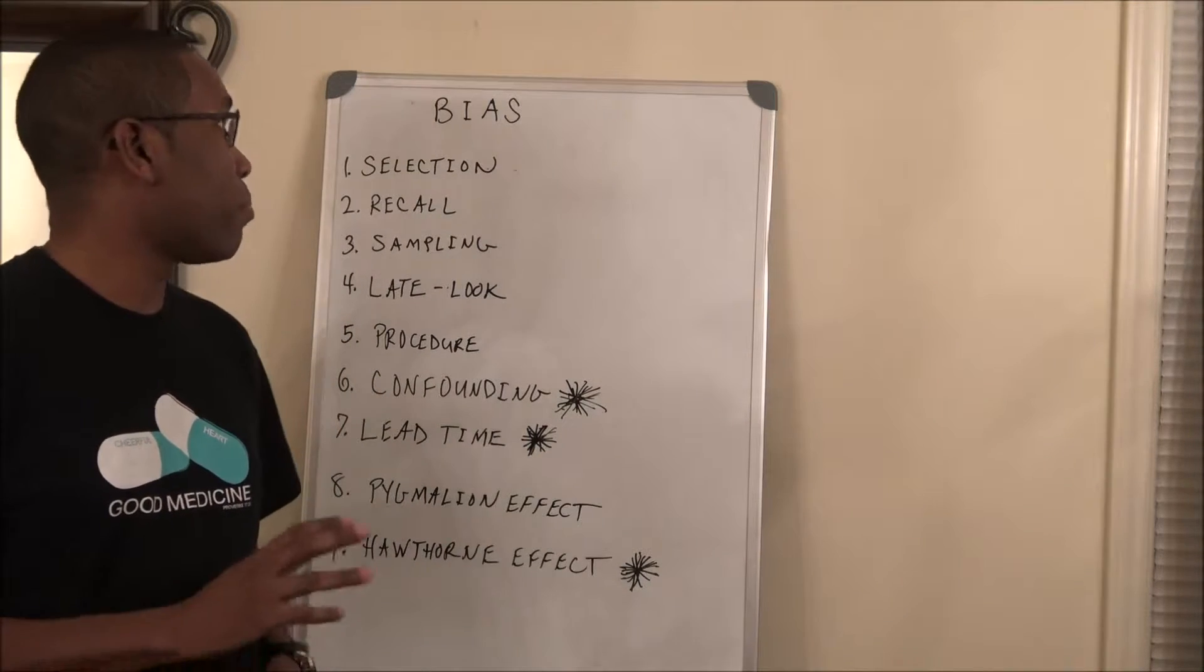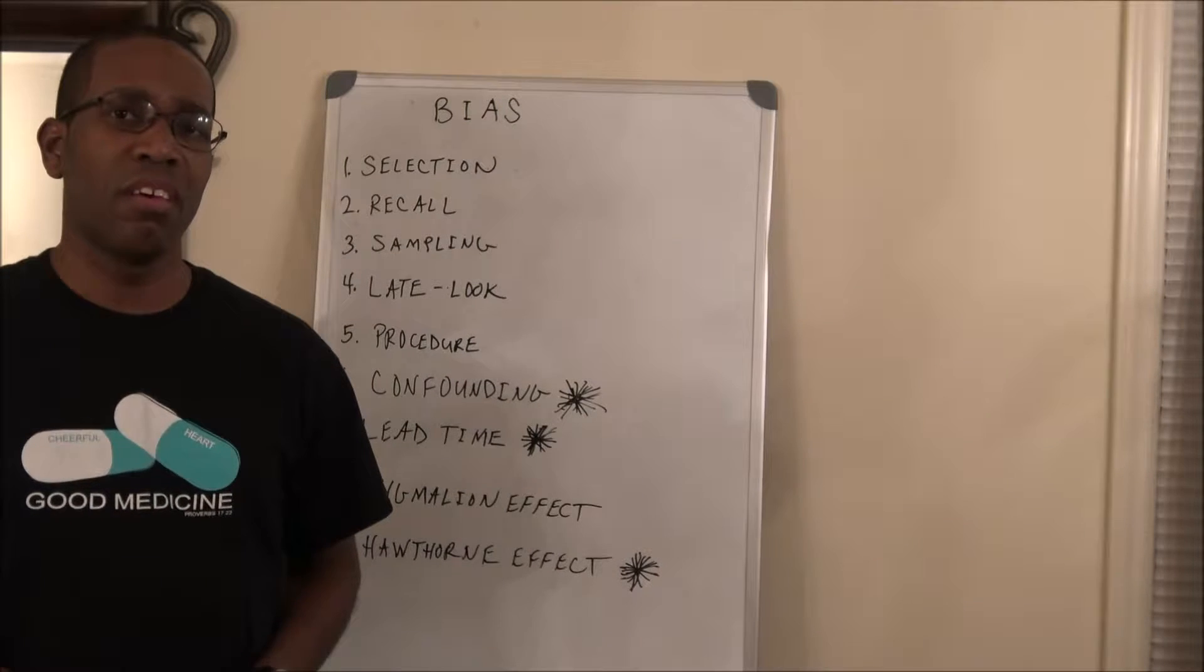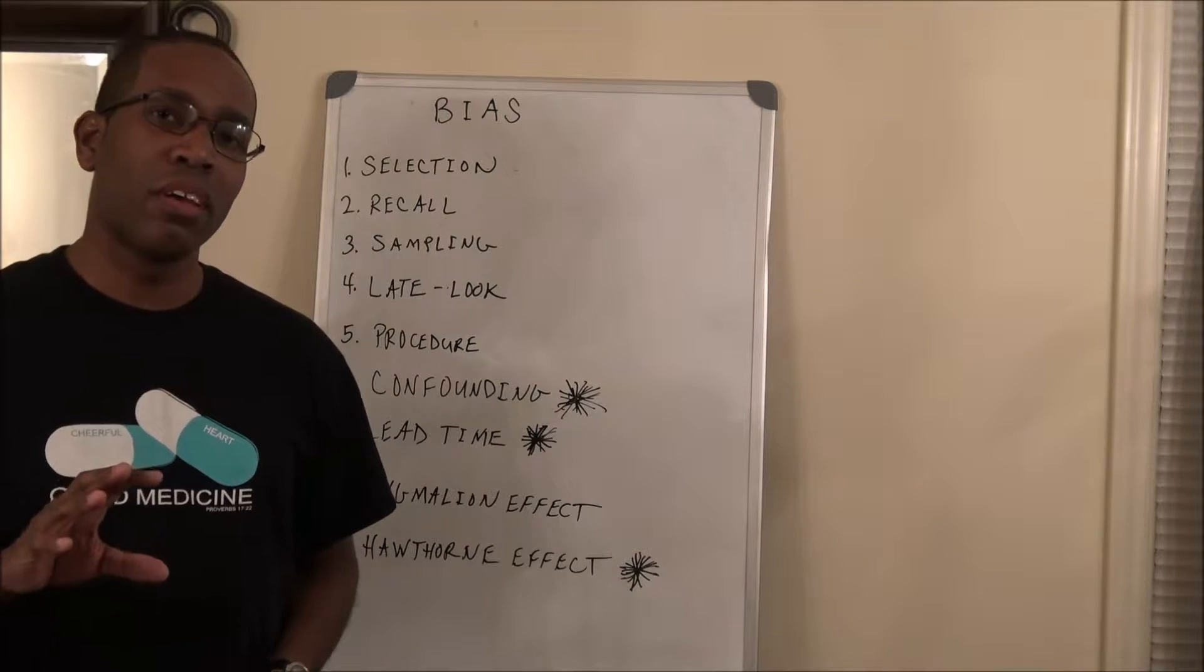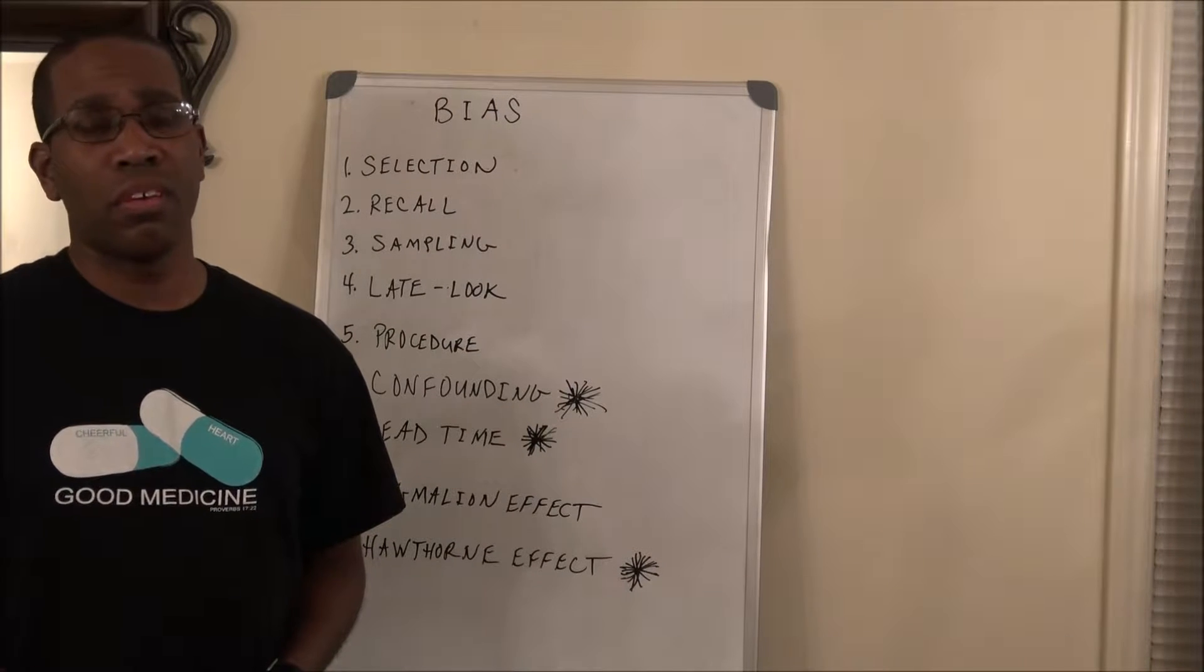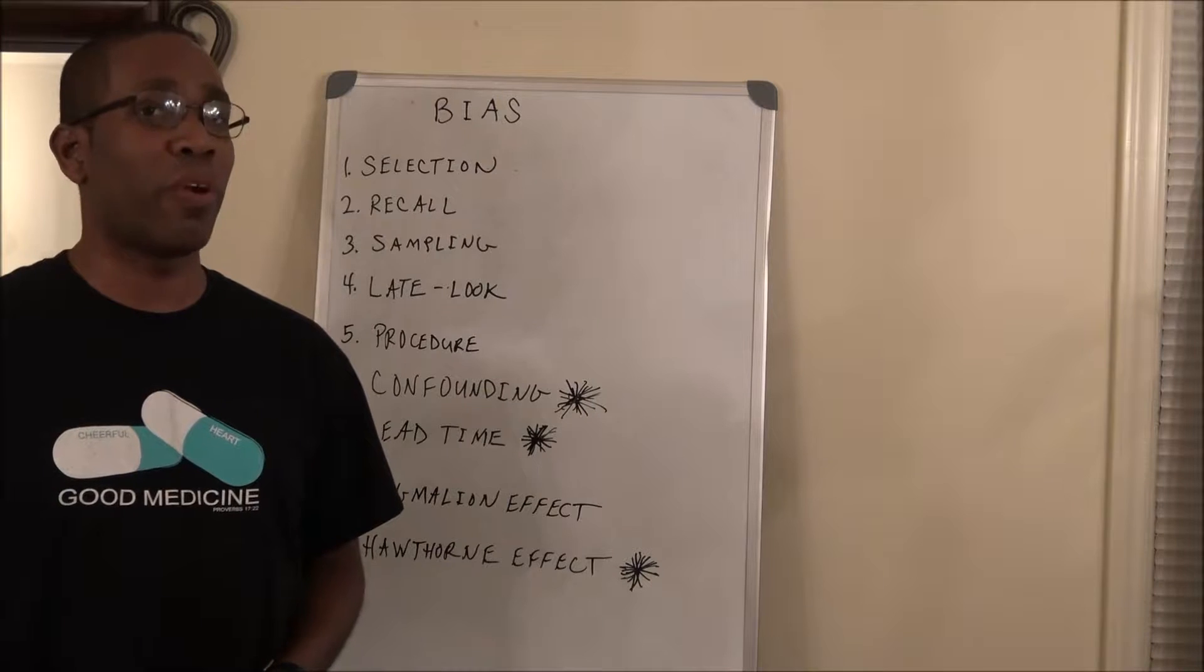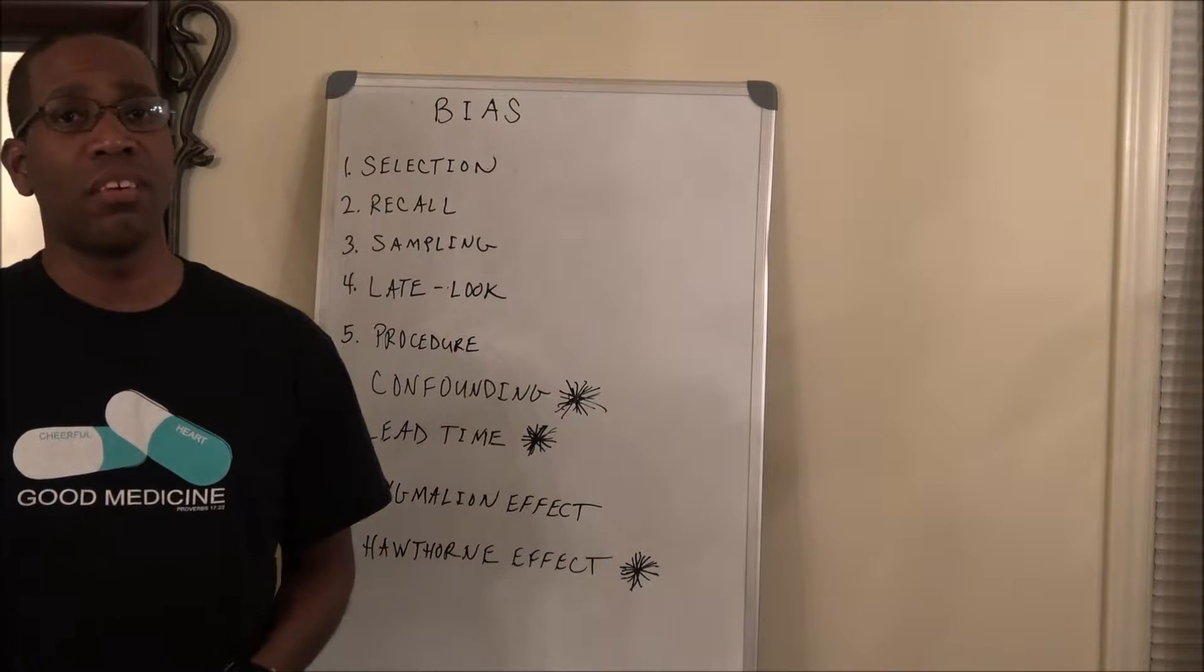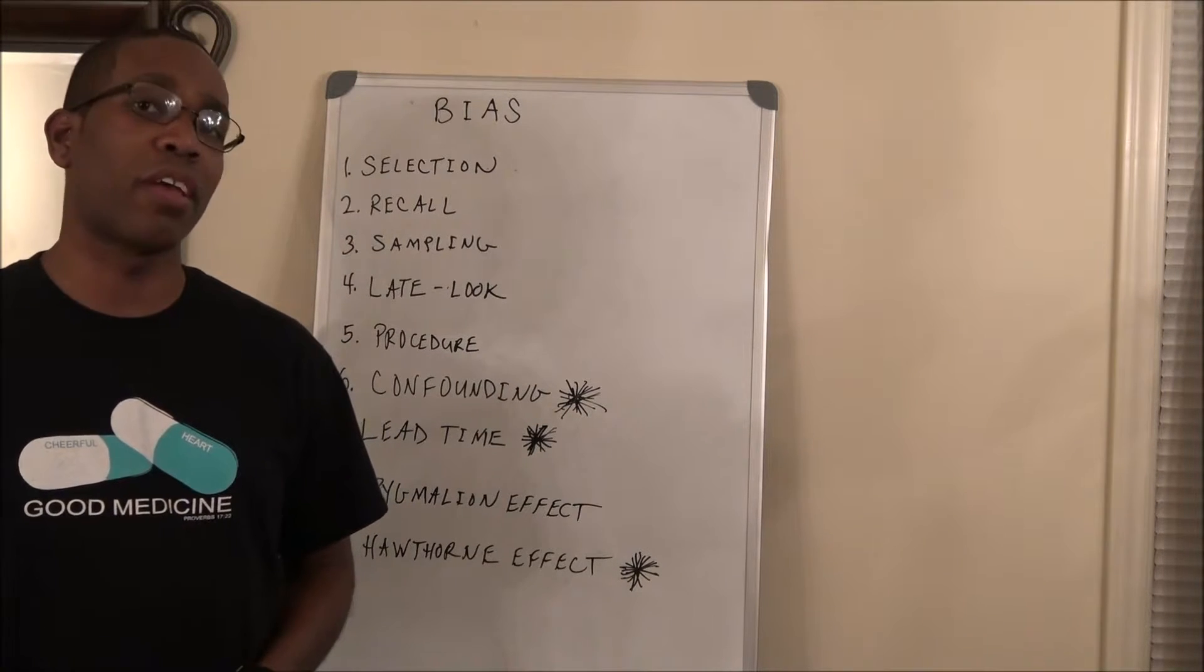I want to take a minute to talk about bias. The first type of bias is selection bias. Selection bias is when there is non-random assignment to a particular study group. Essentially, you're not picking people at random. That is going to lead to selection bias, and the way to fix that is just to pick people at random when you're making your study.